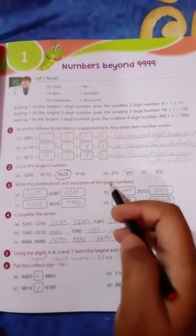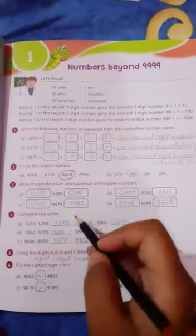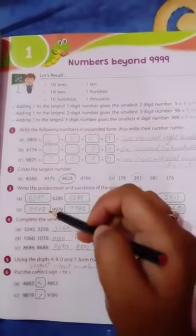Write the predecessor and successor of the given number. Now write the number of smaller or bigger. So question number 1, 2, 3, 4 is your homework.